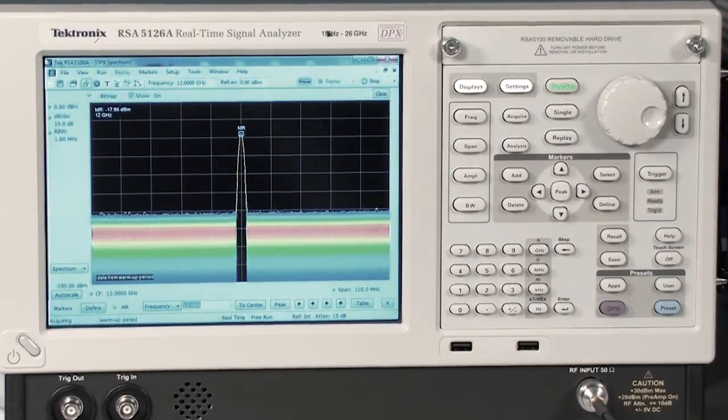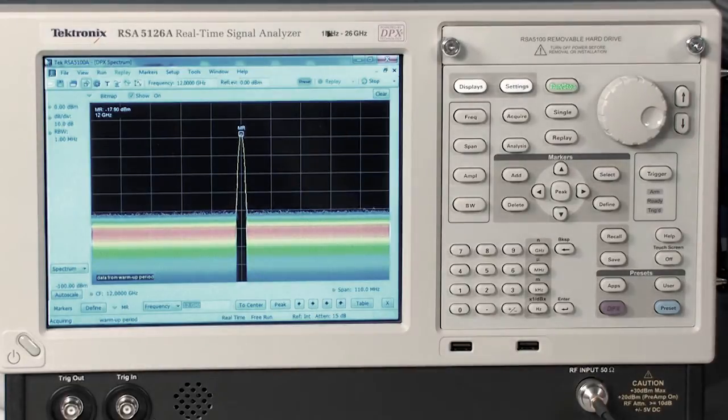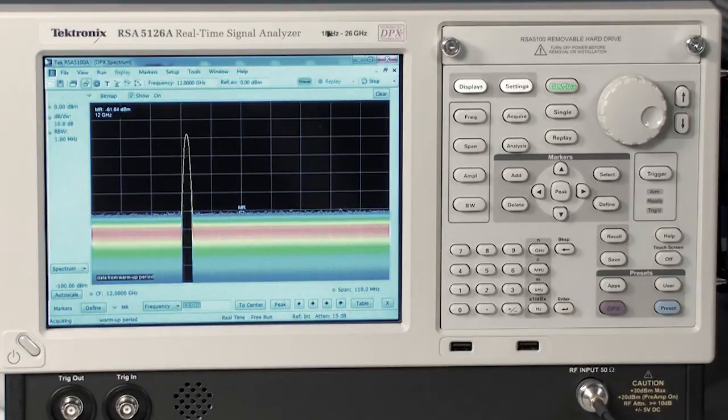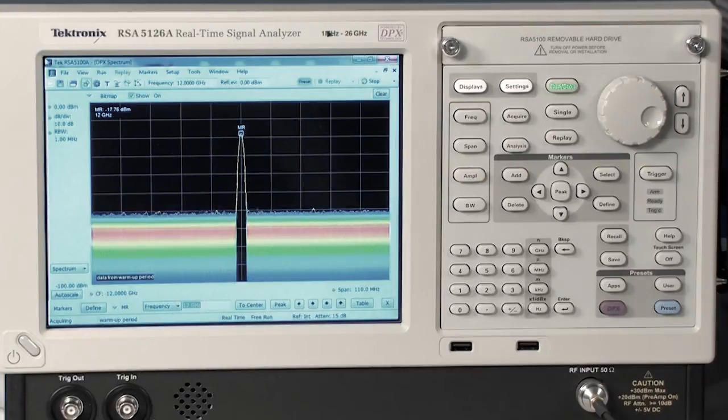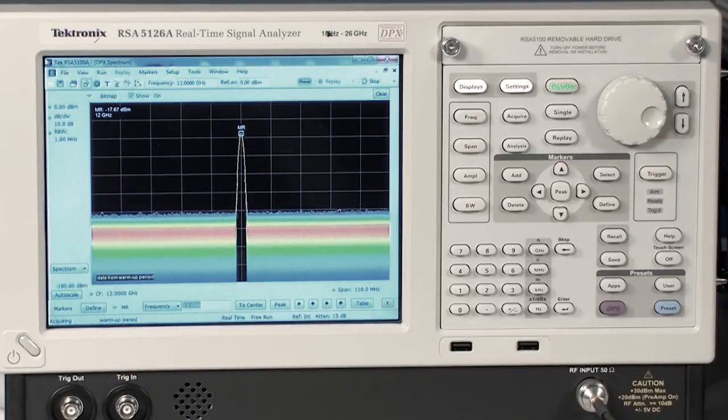Now, I'm looking at the same 12 gigahertz signal on the Tektronix RSA 5126A real-time signal analyzer. And again, as I adjust the frequency of the microwave signal analyzer upwards or downwards, I can see the signal update on the screen live. Now, to demonstrate the fact that we have an image-free architecture on the Tektronix RSA, I don't have the same image frequencies to tune to where I can show problems with the analyzer.